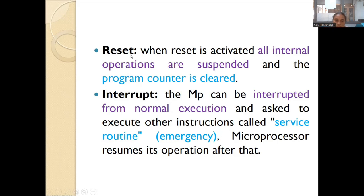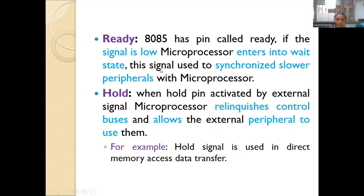In reset, the previous process is stopped completely, but with the interrupt signal it is temporarily stopped and can be resumed again. The ready signal: the 8085 has a pin called ready. If the signal is low, the microprocessor enters a waiting state. This signal is mainly used when the microprocessor is communicating with a peripheral device that is slower than the microprocessor, to synchronize the slower peripheral. When the microprocessor transfers data to a slower peripheral, the ready signal goes low so the microprocessor waits until the receiver has received the data.